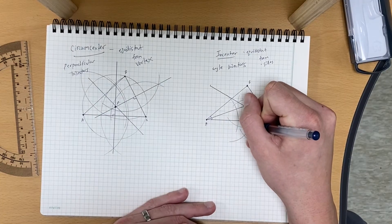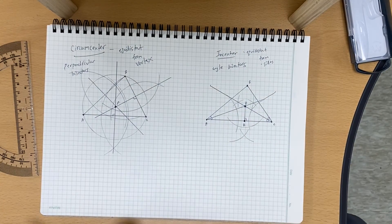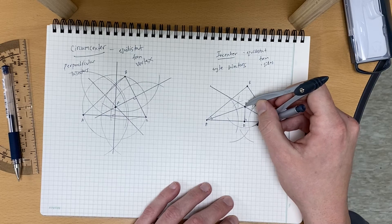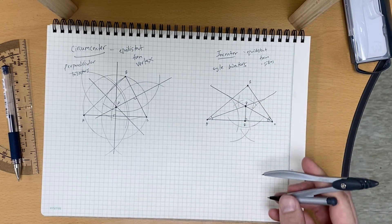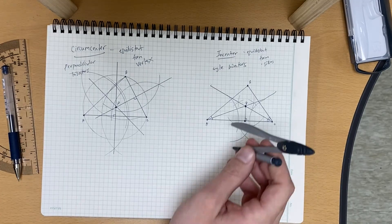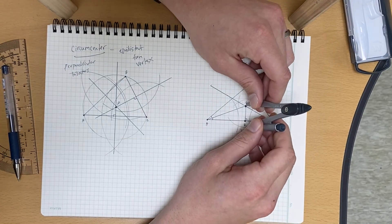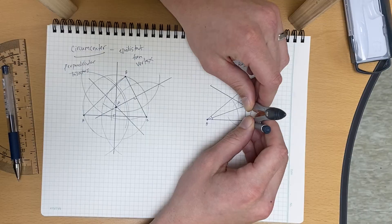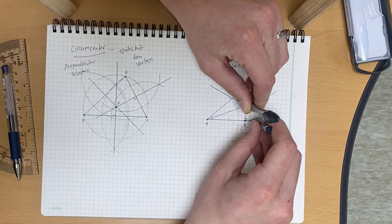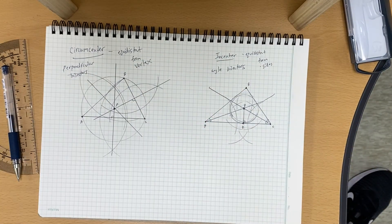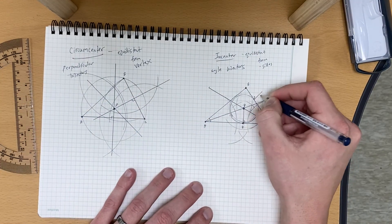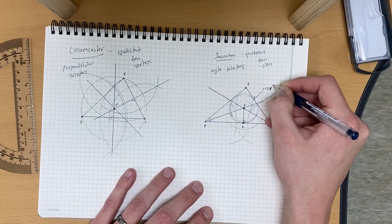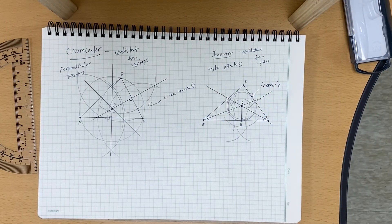We'll call this point R. We put our needle at point P and the other end at point R and draw a circle. There we have our incircle — and that's how you construct the incenter and the incircle.